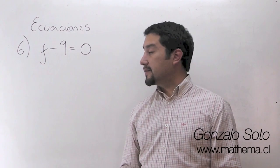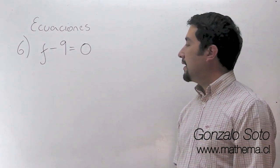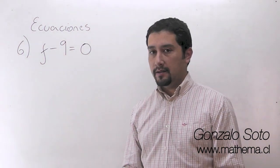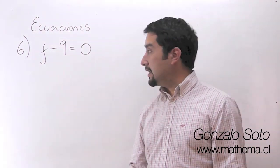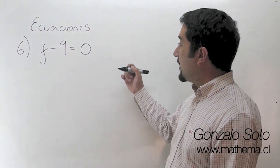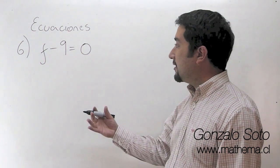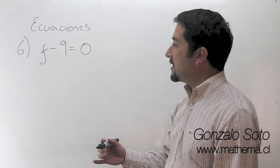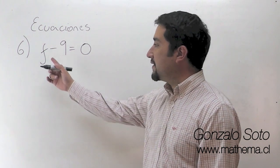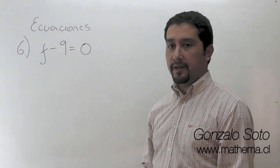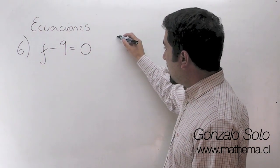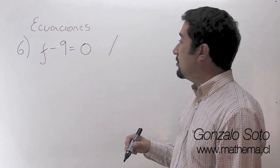El ejercicio 6 es un ejercicio mucho más simple, pero de todas maneras tenemos que seguir haciendo lo que estamos haciendo. Uno lo podría mirar y sacar inmediatamente el valor de f y decir f vale 9. Lo vamos a hacer como lo estábamos haciendo para que ustedes vayan practicando.